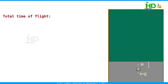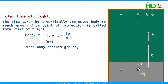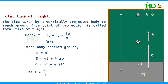Time of flight is the total time taken by a vertically projected body to return to the ground from the point of projection. It equals time of ascent plus time of descent, which is 2u divided by g. This can also be derived by setting displacement s equal to zero in s equal to ut minus half g t squared, giving 0 equal to ut minus half g t squared, and solving to get t equal to 2u divided by g.